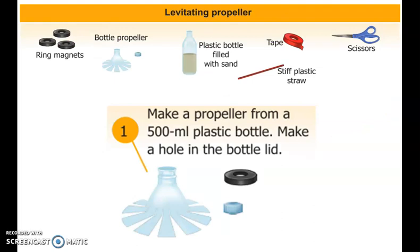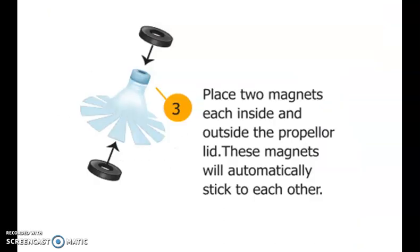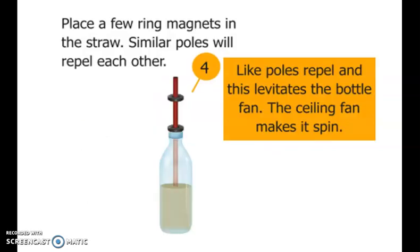One activity is a bottle fan. You need a plastic bottle filled with sand, tape, a plastic straw, and scissors. A magnet is fixed to the propeller. When like poles face each other, they repel, and the bottle fan rotates — because like poles repel. This demonstrates the repulsion concept.